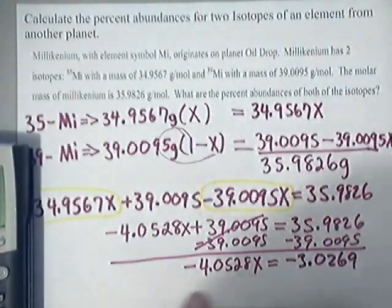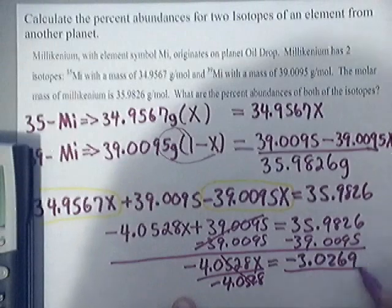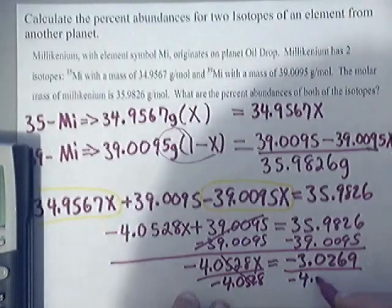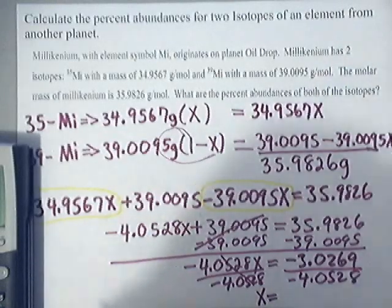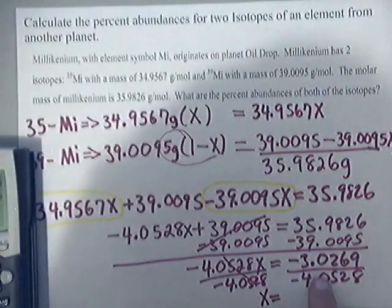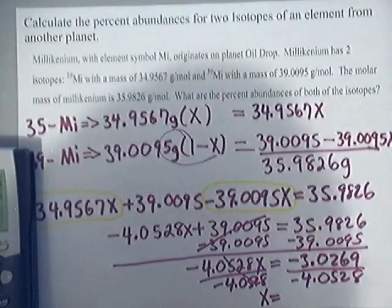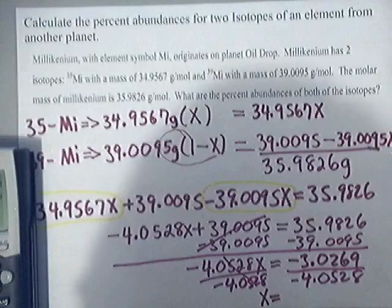Now we need to divide both sides by negative 4.0528 to get the x by itself. That gives a positive number, so that means x is equal to... let's punch that in. Negative 3.0269 divided by negative 4.0528, and you end up getting the following.